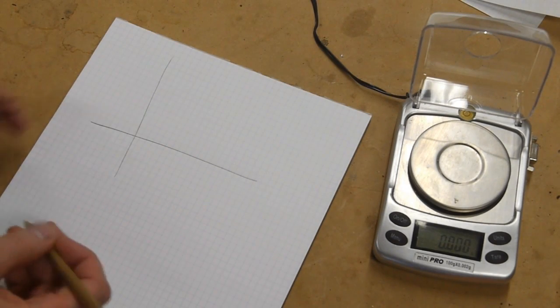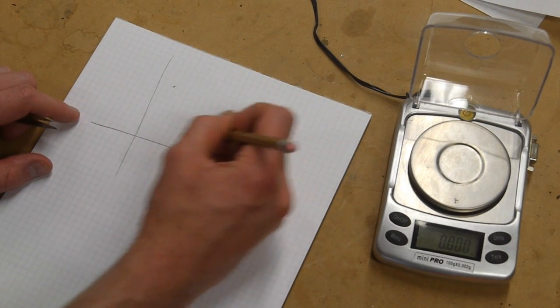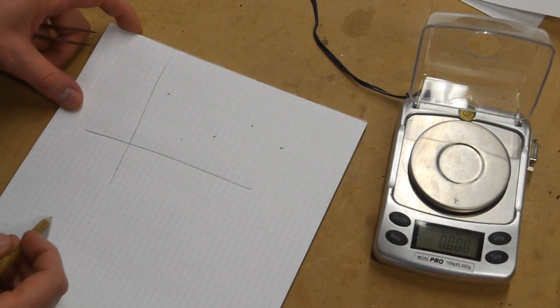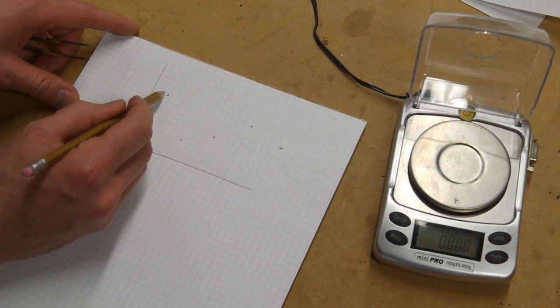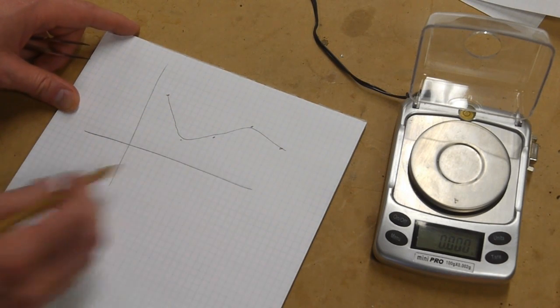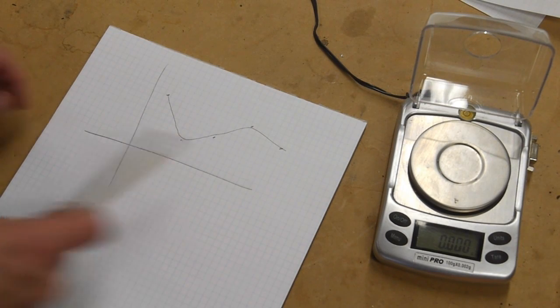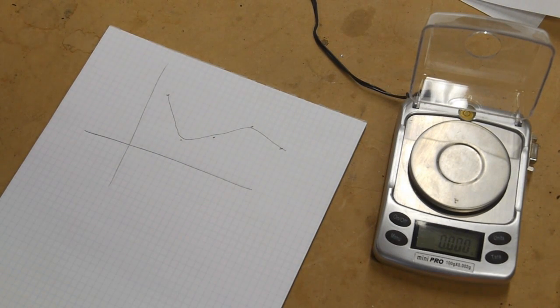For example, if you were taking data on the flow rate into a reservoir or something like that, and it didn't really follow any particular mathematical function, you could still connect all these points with lines and then use the math trick to get the total amount of volume in the reservoir. Of course, if you're an engineer, you would just build a flow meter that did the integration mechanically, but anyway.